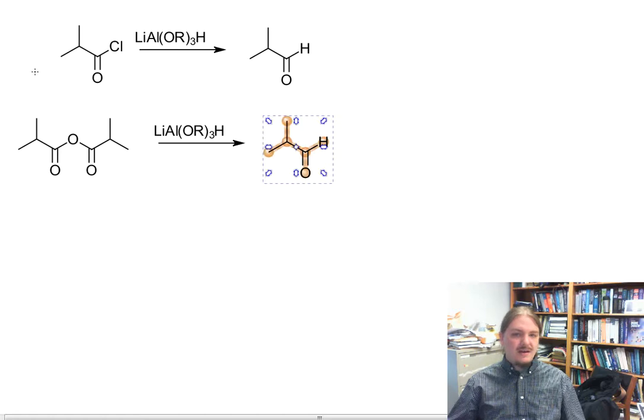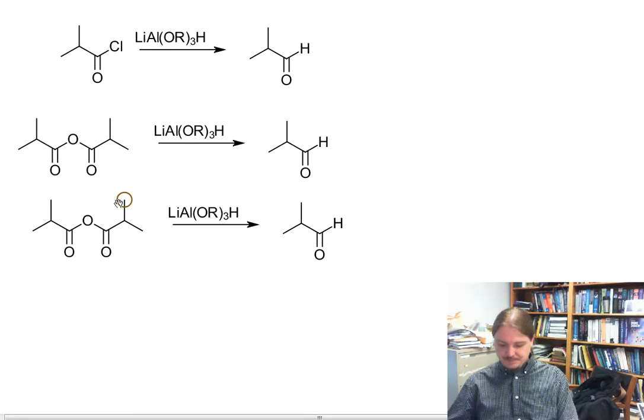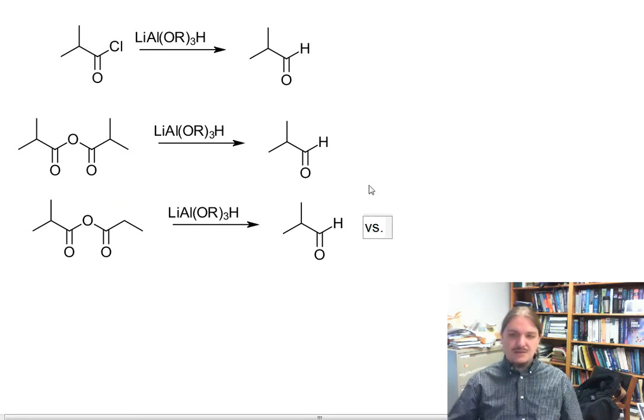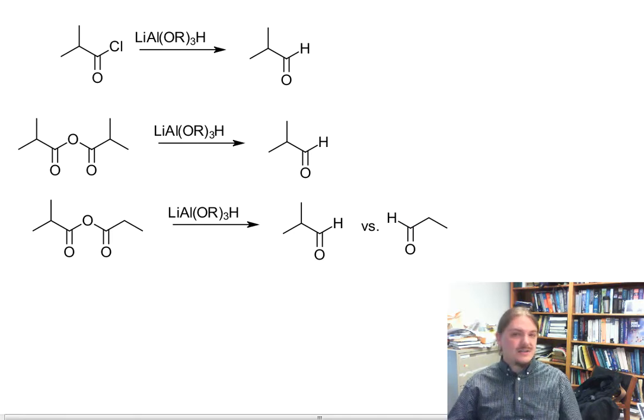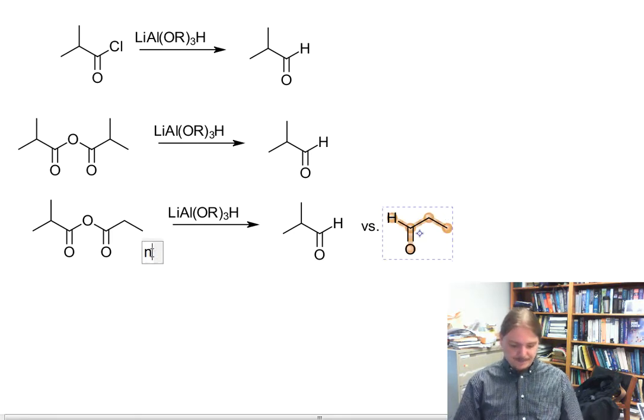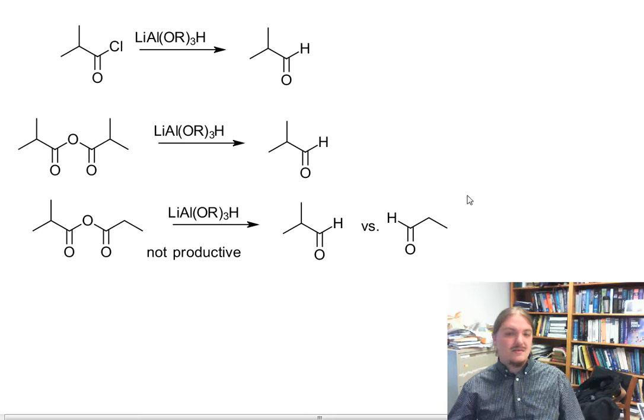If we have a non-symmetric or mixed anhydride, it's not clear that it's easy to control which carbonyl group in the anhydride gets reduced—which one is the electrophile and which one is the leaving group. So generally, this variation is considered not productive.